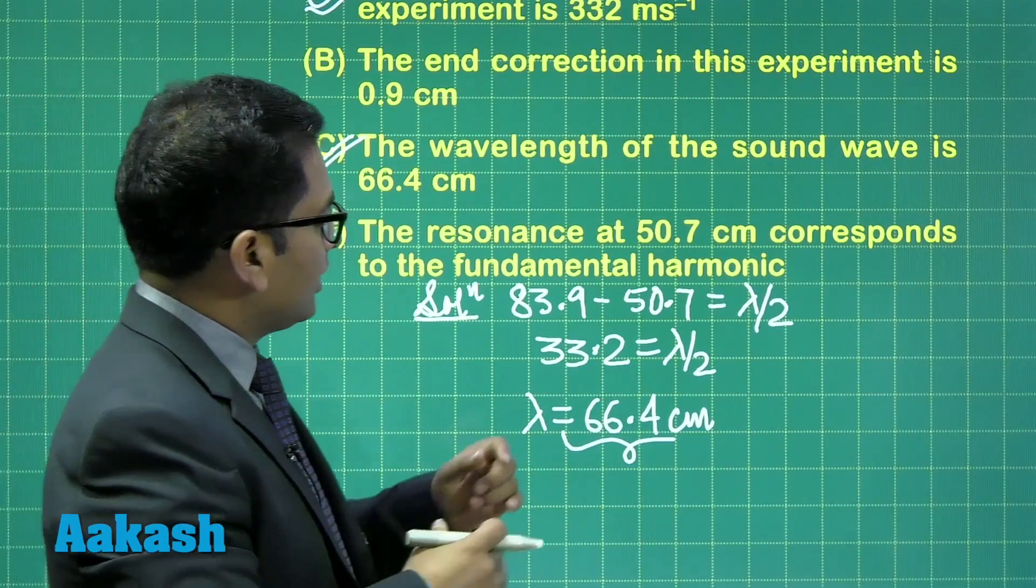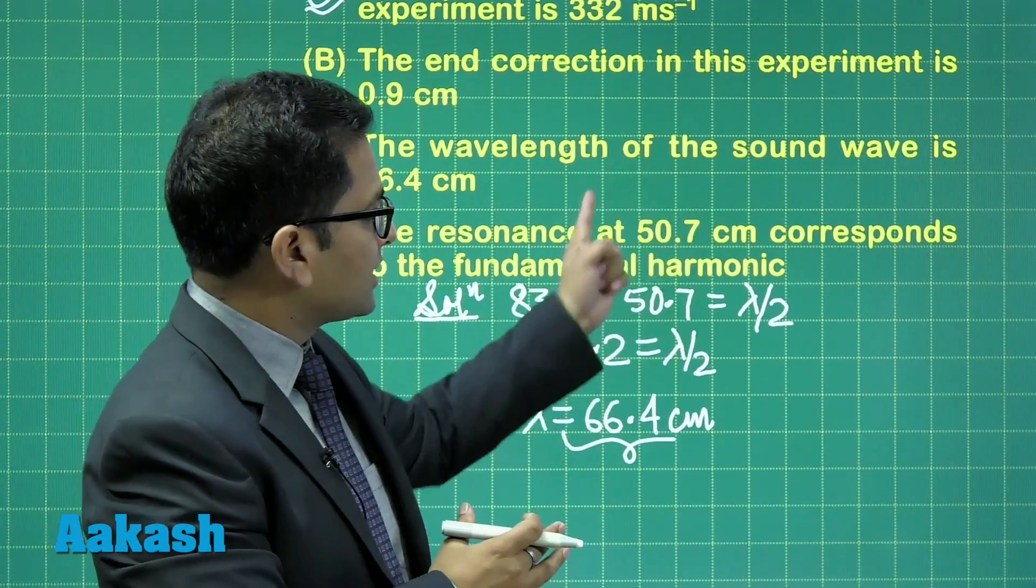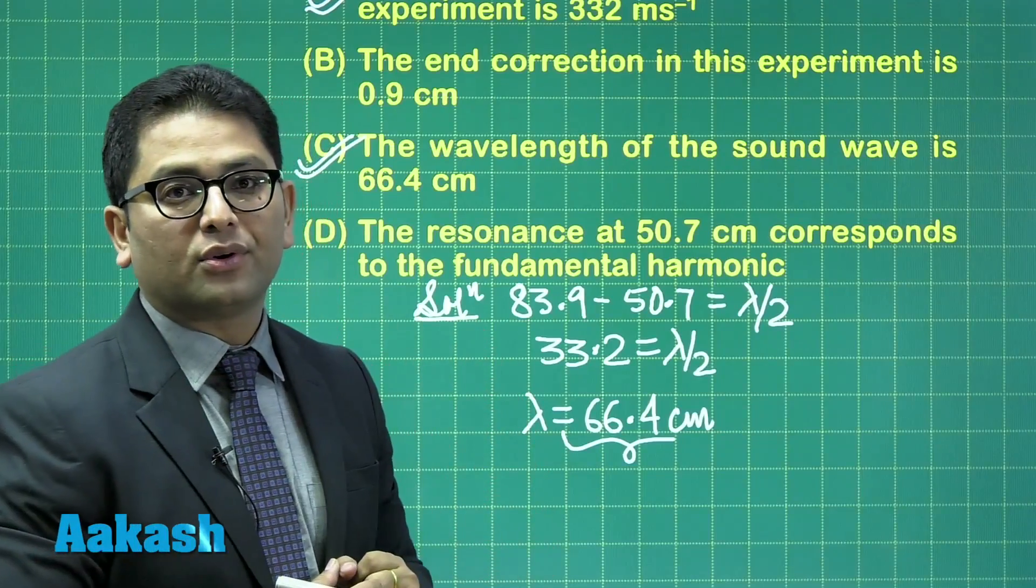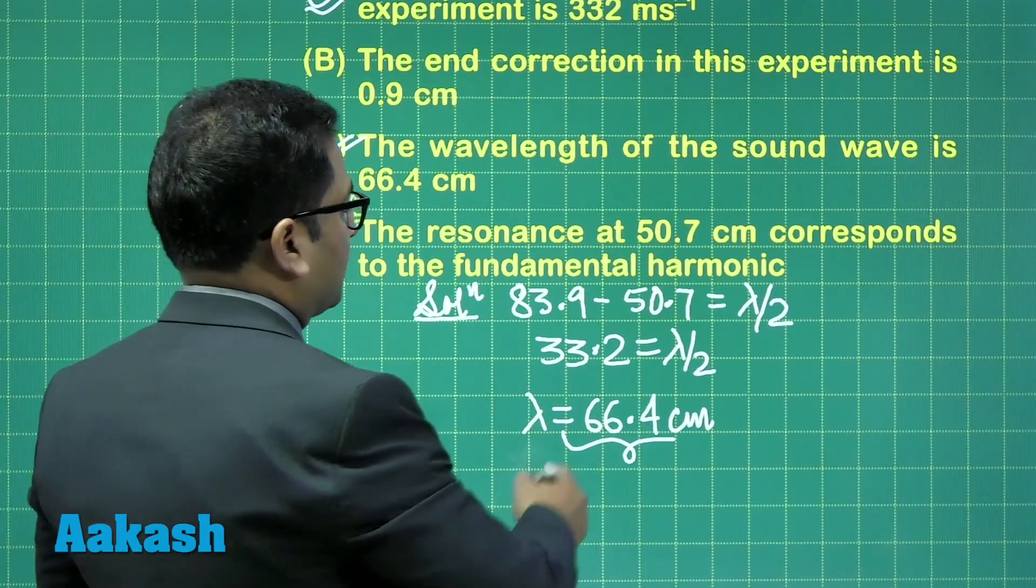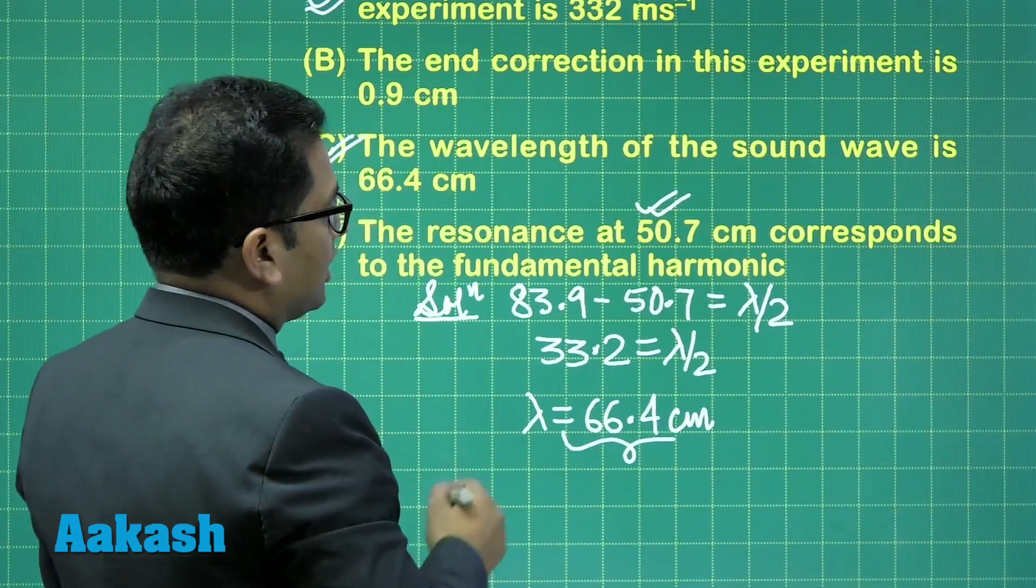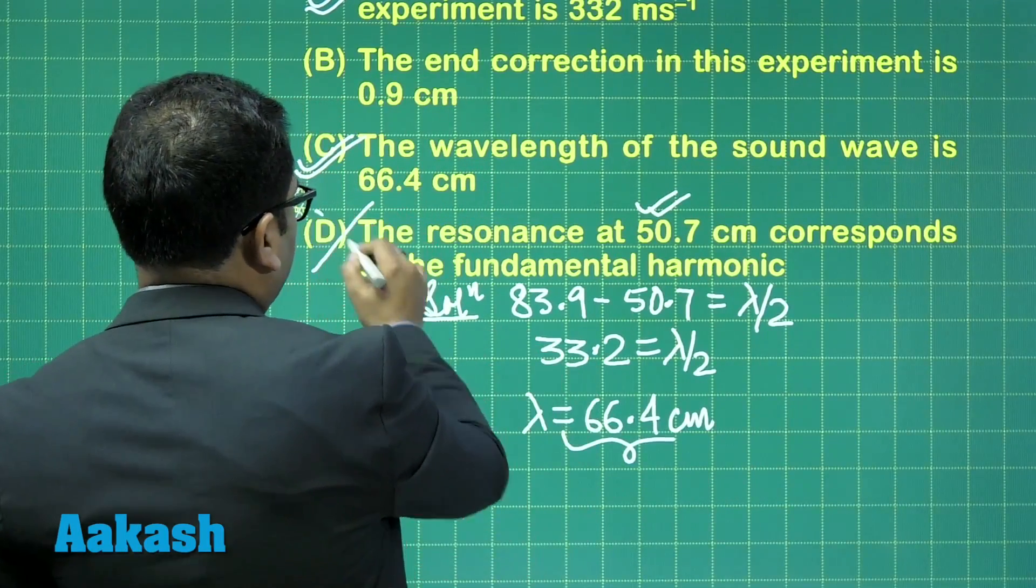And the resonance that has been reported here is 50.7, so it is very close to 3 times lambda by 4. So, therefore, this one has to be the third harmonic. So, the option number D would be incorrect.